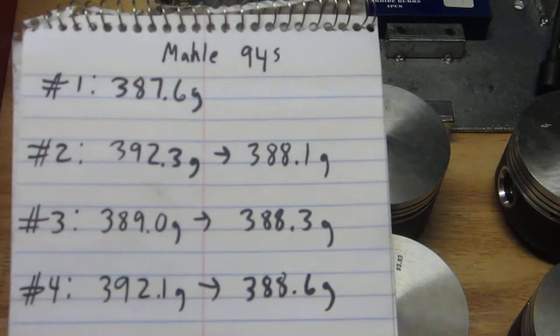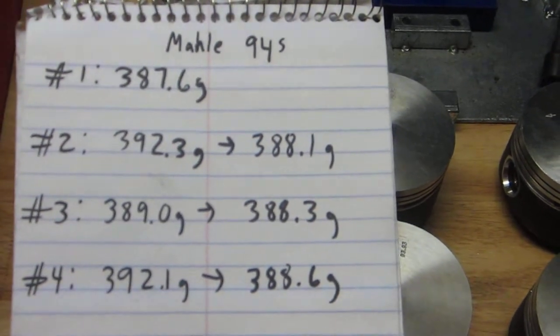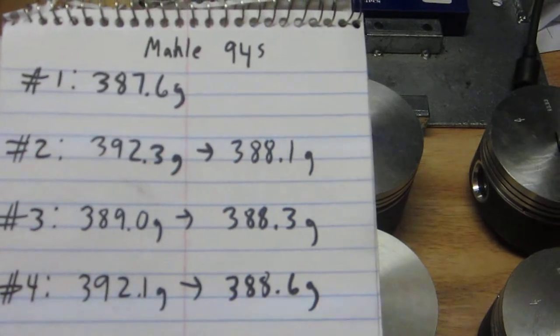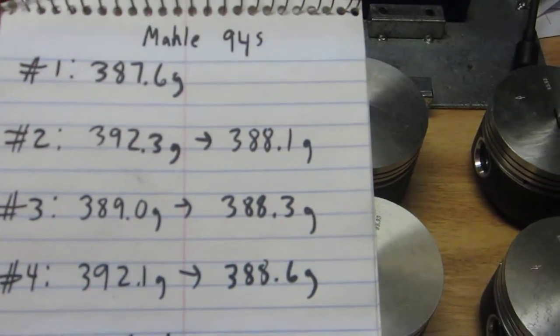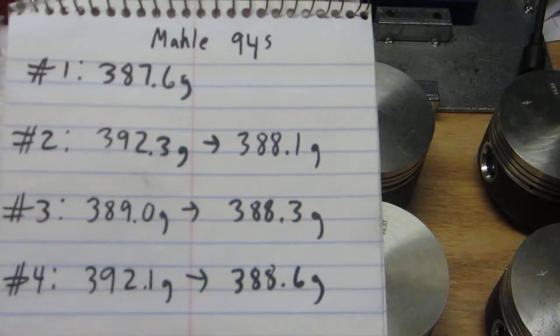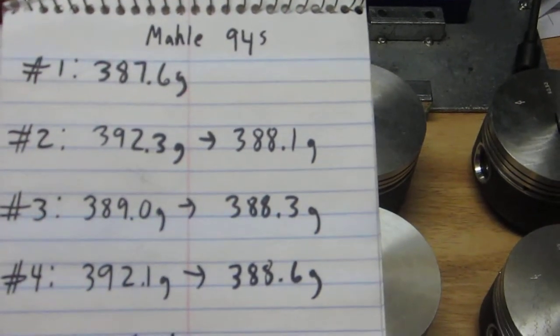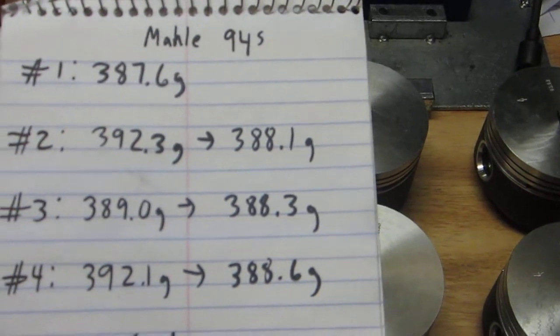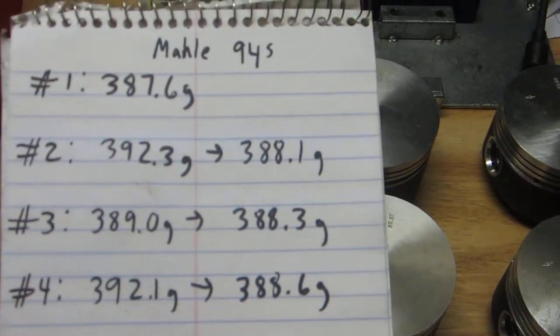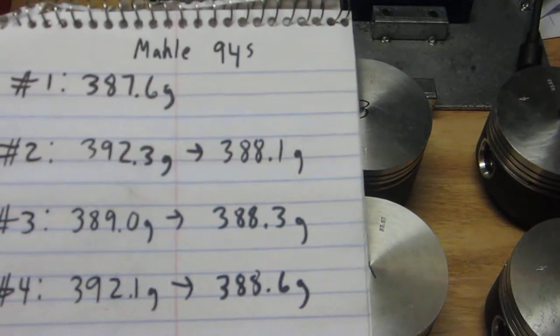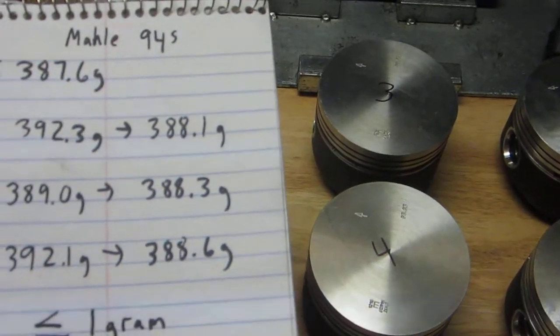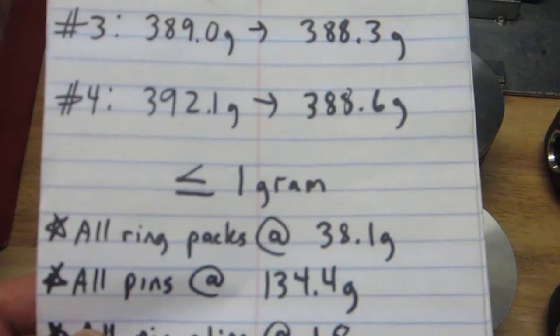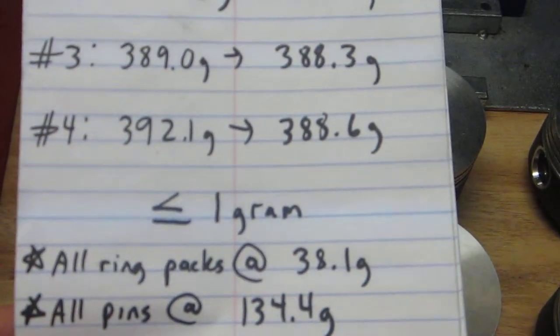So I did some grinding. The biggest variance now is number four. After I did the grinding, it's now coming in at about 388.6 grams, which is about a gram heavier, right on the nose with the number one. We're shooting for less than or no greater than one gram, so I endeavored to achieve that.